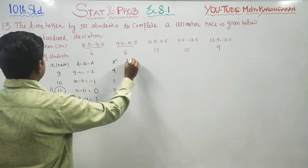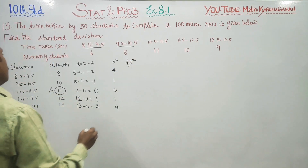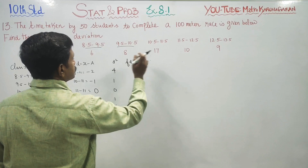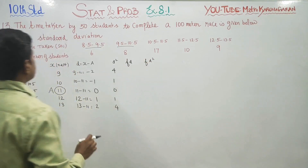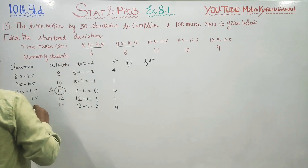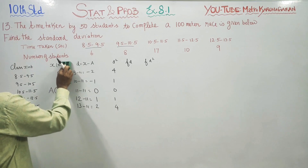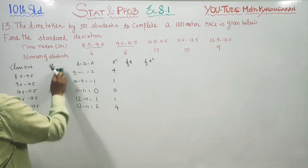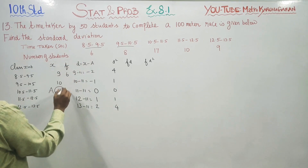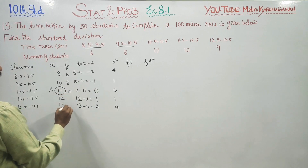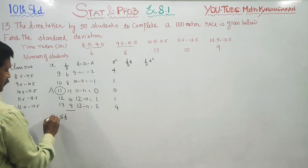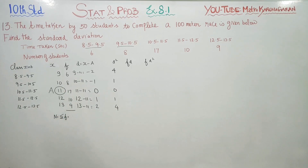You have to find fd squared as well as fd. I have to write the value of f — I had missed f. My f values are: 6, 8, 17, 10, and 9. You have to add this. Sigma f is called n.